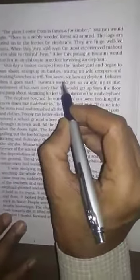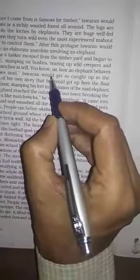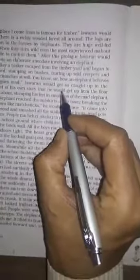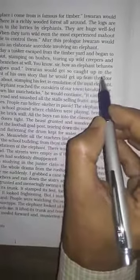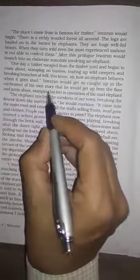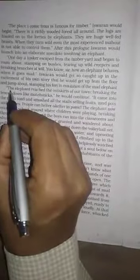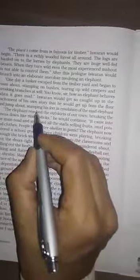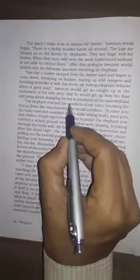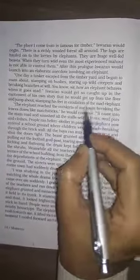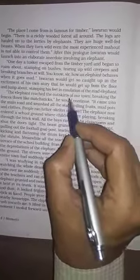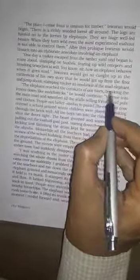With respectful, Iswaran said to Mahendra that, you know sir, how an elephant behaves when it goes mad. Iswaran would get so caught up in the excitement, means Iswaran would also involved, also indulge into the enthusiasm of his own story, and further he got off from the floor and jumped about, and also stopping his feet in emulation of the mad elephant, means he also copying the activities of the mad elephant.